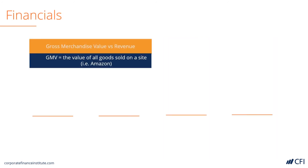Now onto the financial metrics in more detail. Gross merchandise value compared to revenue is a very different metric. Gross merchandise value is the value of all goods sold on a site — for a marketplace-type business, this number would be very large. An analogy: if you are a real estate agent, the value of all the houses you sold in a year would be your gross merchandise value, while the commissions you earned from selling those houses would be your revenue. Be very careful — these are very different numbers.